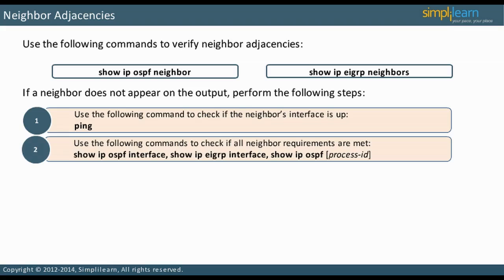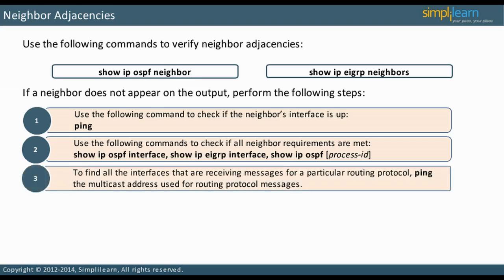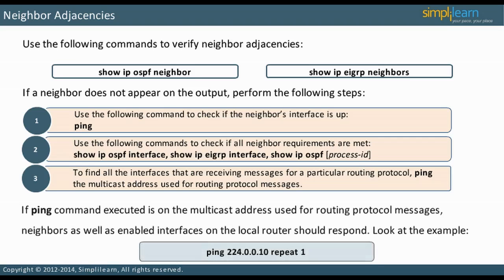Accomplish this with the Show Interface commands, among others, for the particular routing protocol. You can find all the interfaces that are receiving messages for a particular routing protocol by pinging the multicast address of that particular protocol. Look at the example given on the slide.